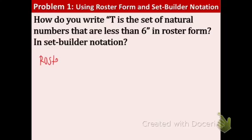Remember, this is just a list. So natural numbers that are less than 6. And it's called set t. So t equals braces 1, 2, 3, 4, 5. And it has to be less than 6. And remember, natural numbers start with 1.